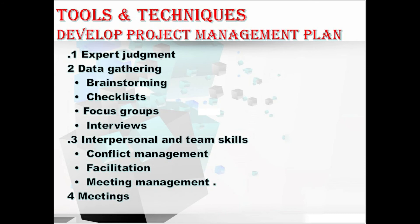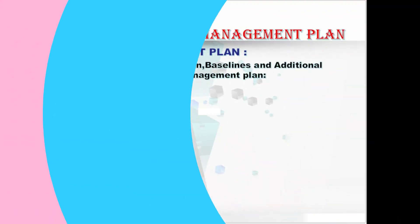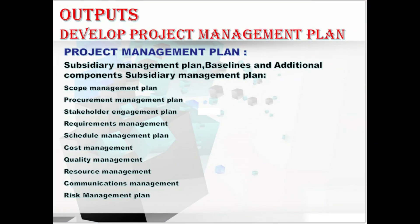Let's move to its outputs. In outputs we have only one output: the project management plan. The project management plan is the document that describes how the project will be executed, monitored, controlled, and closed. It integrates and consolidates all the subsidiary management plans and baselines and the other information necessary to manage the project. The project management plan components include the subsidiary management plans, baselines, and additional components.